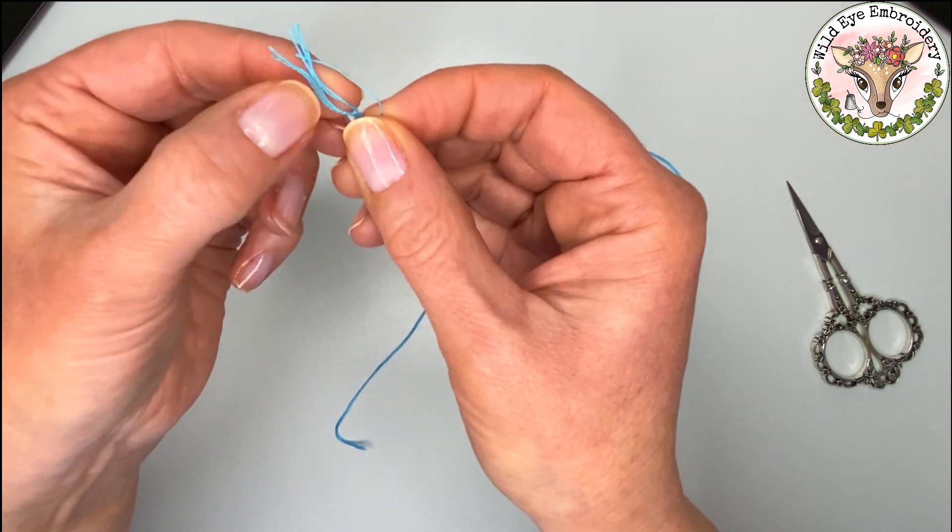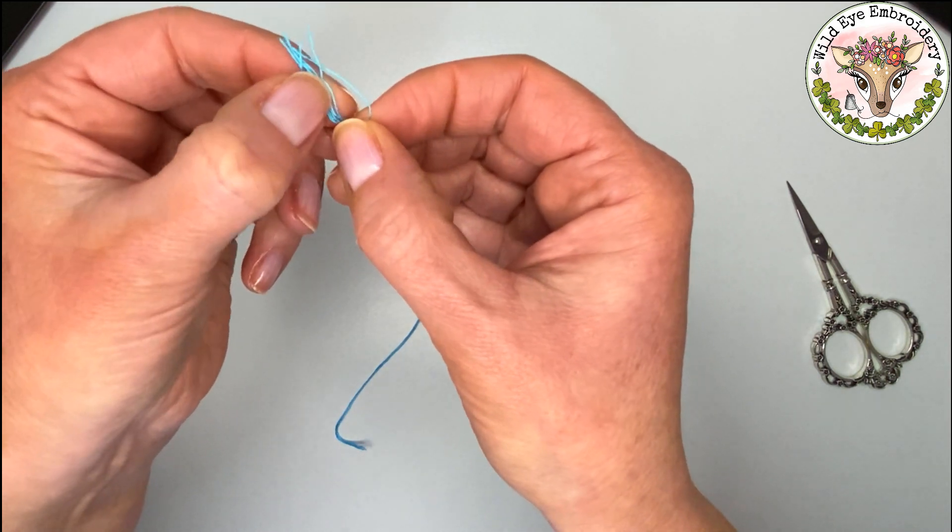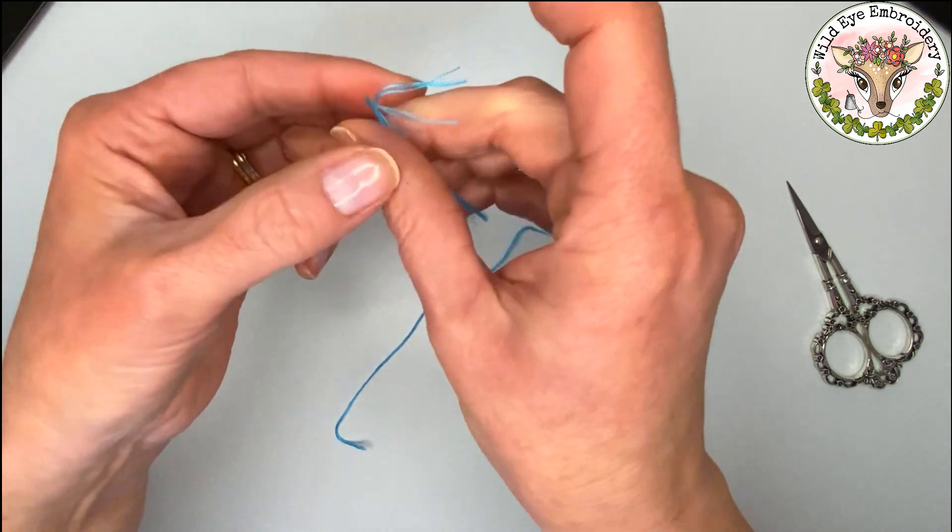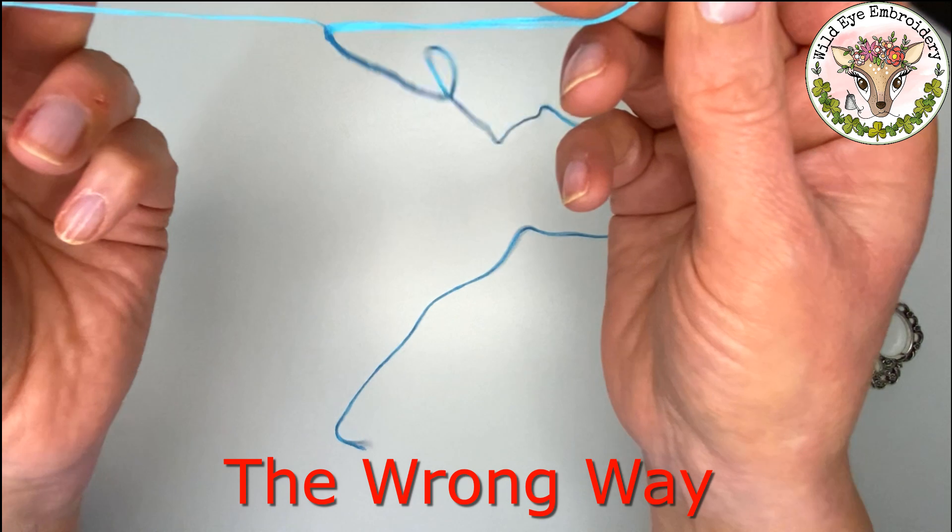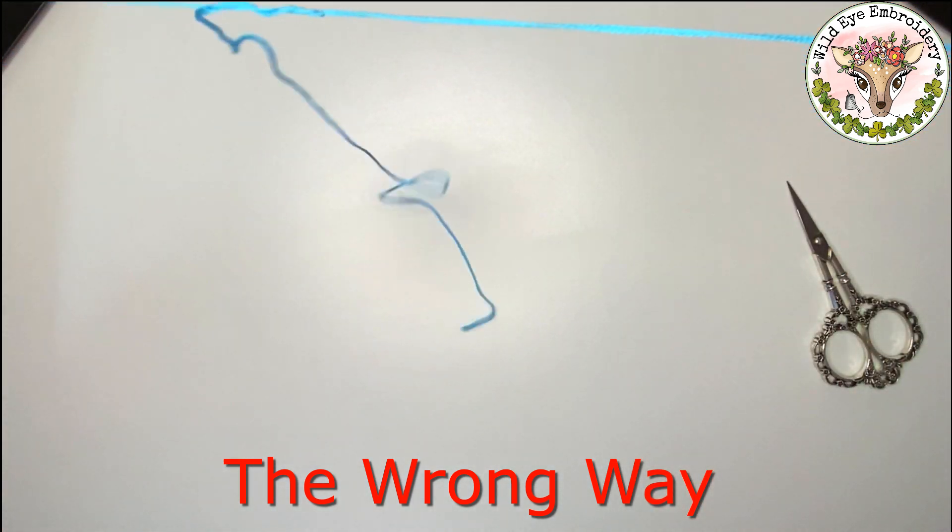Now what I'm going to do next is actually do this the wrong way. The reason why I'm going to show you this is because a lot of people do actually separate their strands like this and it leads to a lot of frustration, a lot of tangles and the knotting of your floss. So I'm separating into two, in other words three strands in my right hand and three strands in my left.